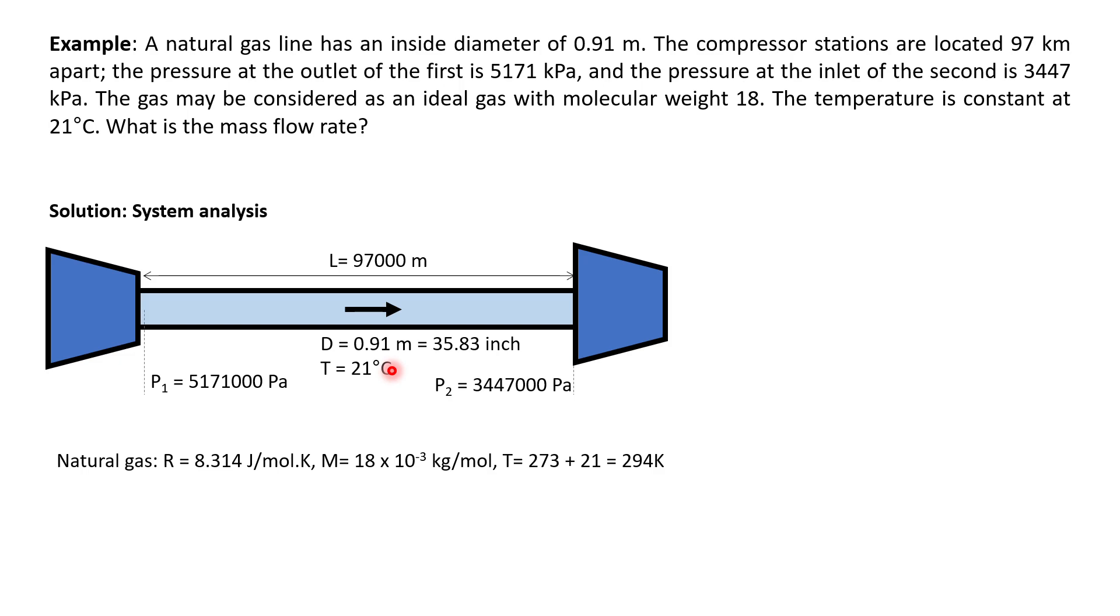So the next thing to do when we know the system well is to go for some of the physical properties data of natural gas. We are given, there are always constants. This is the universal value of gas constant, 8.314 J per mole Kelvin. Here the molecular mass is given as 18 gram per mole.